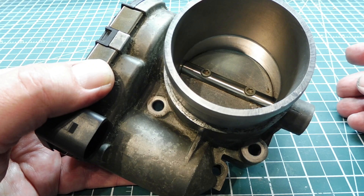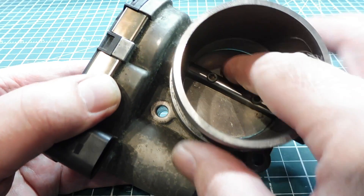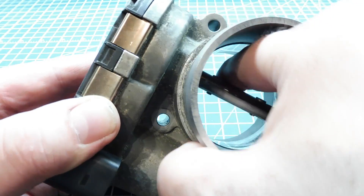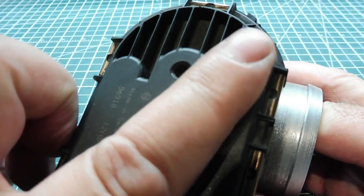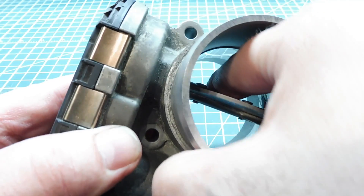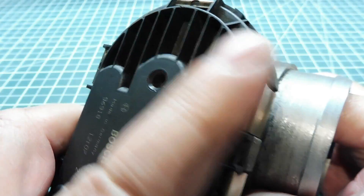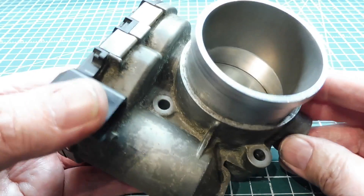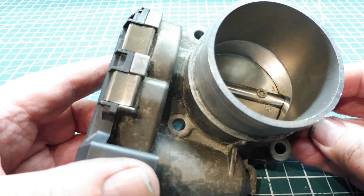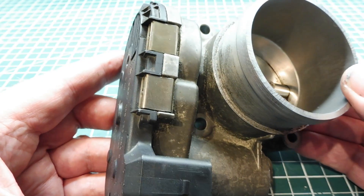When we send a PWM signal to the throttle body, it activates the motor inside, which correspondingly opens up the butterfly valve according to the PWM signal. As the valve opens, there's a feedback sensor — basically a potentiometer that sweeps back and forth — which can detect the angle of the butterfly valve. You get 0 to 5 volts from idle to full throttle off this sensor, fed back into the computer. If any errors are detected, the system will go into limp mode and you'll get a check engine light — that's the safety feature of a drive-by-wire system.